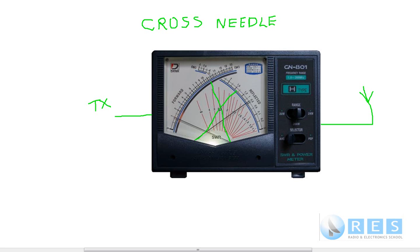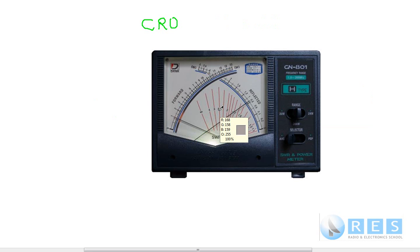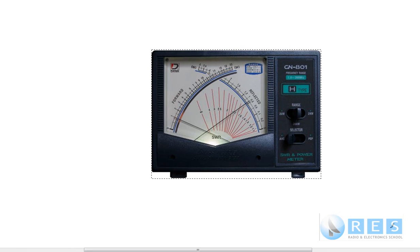Just remember that for the foundation license, 1.5 to 1 SWR or less is an acceptable or good SWR. Well, that's it for standing wave meters for the foundation license. Thanks for your attention — we'll catch you in the next tutorial. Hope you're enjoying the course. Cheers for now. This is Ron VK2DQ for Radio and Electronic School.